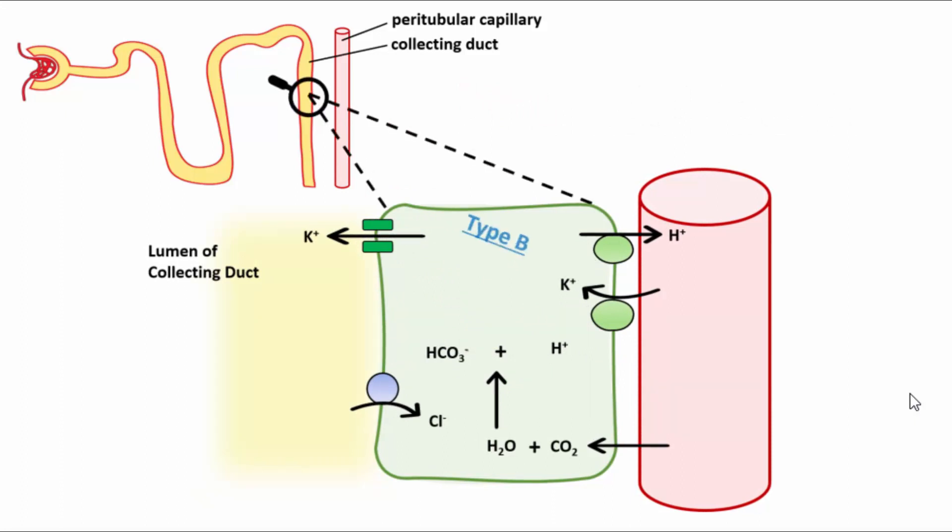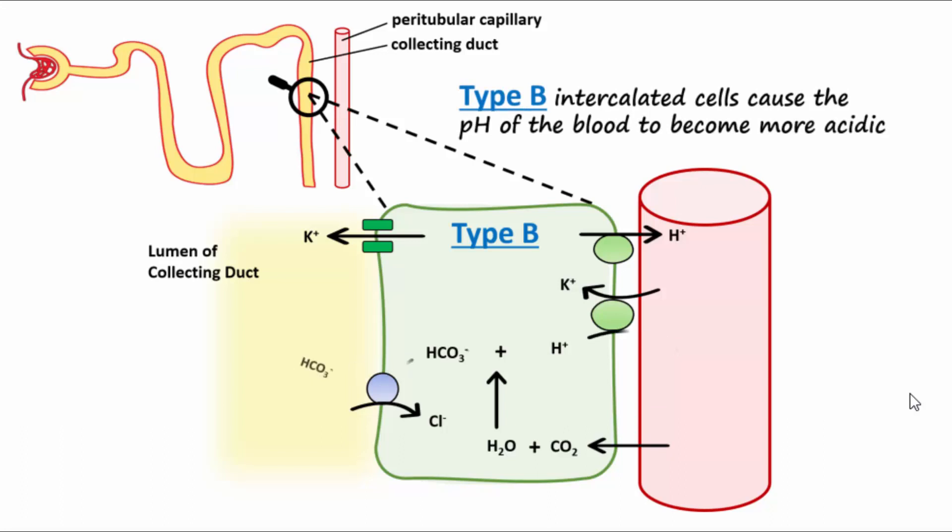Notice how the channels for the type B cells do just the opposite as the A cells. They reabsorb hydrogen ions while secreting bicarbonate ions. These actions cause the blood to become more acidic.